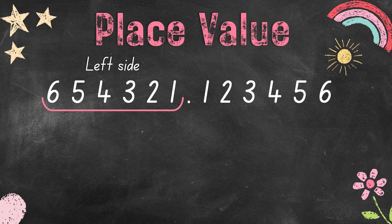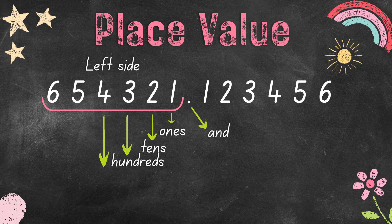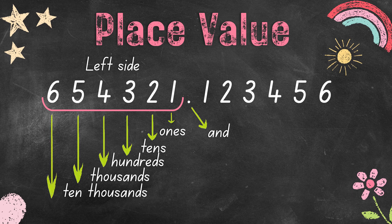Let us focus first on the numbers to the left side of the decimal point. The decimal point is read as 'and.' The first place to the left is the ones place, the second is the tens place, the third is the hundreds place, the fourth is the thousands place, the fifth is the ten-thousands place, and the sixth is the hundred-thousands place. It is followed by millions, ten millions, hundred millions, and billions. These are the whole numbers.